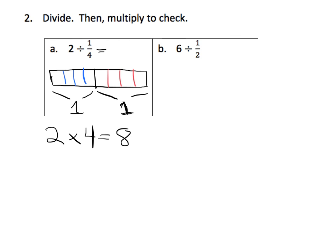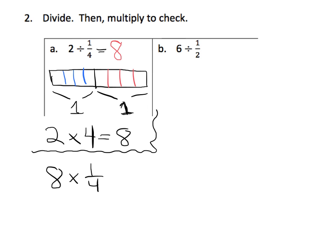How would we check? If we say that 2 divided by 1 fourth equals 8, we take 8 and multiply by 1 fourth to see if we get 2. So 8 times 1 fourth — we know that is 8 times 1 over 4, which equals 8 over 4, which equals 2. So we checked it out — it works.